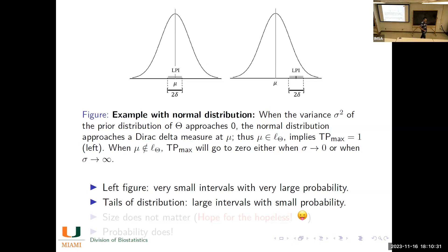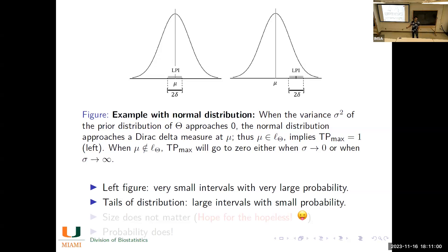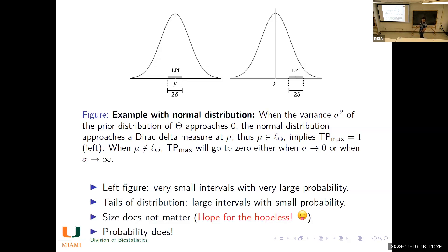This shows something important: we can have very small intervals with large probability, contrary to what some physicists have said. And we can have very large intervals with negligible probability — think of the tails of a normal distribution. This definitively shows that fine-tuning can only be determined by probability, not by the size of the intervals. We actually have a paper whose working title is 'Size Does Not Matter' — what matters is the probability.